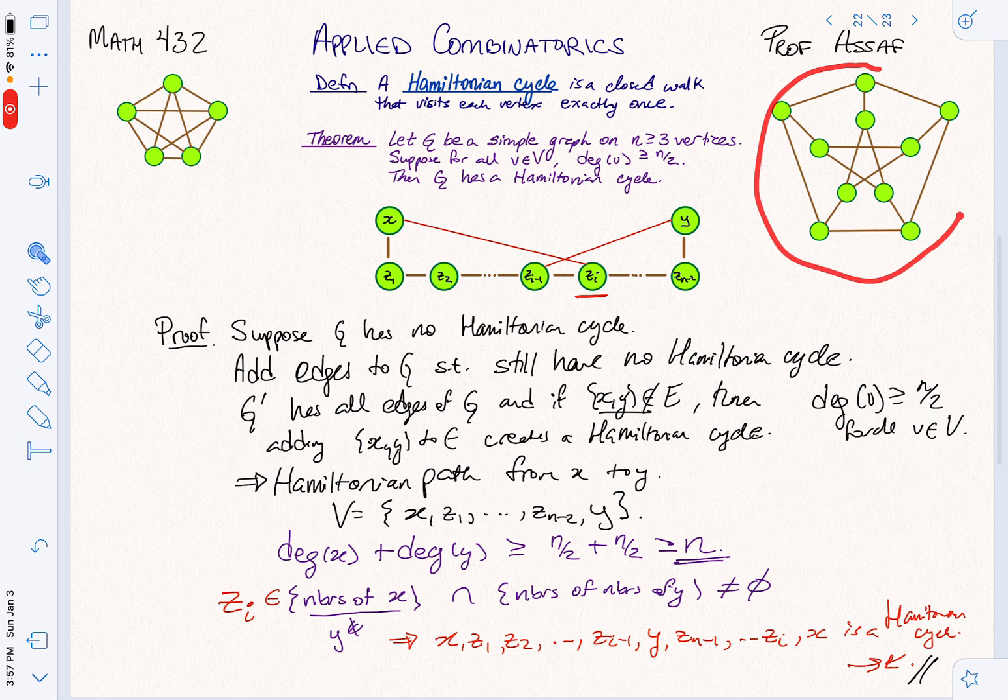And now you can check. It's a nice exercise to check. Why does the Peterson graph not have a Hamiltonian cycle? It's not implied by this theorem. Some graphs with very few edges have Hamiltonian cycles. This one does not.